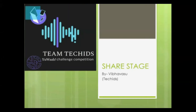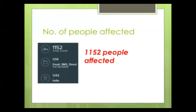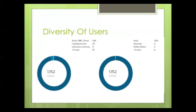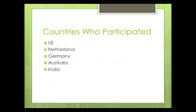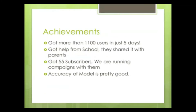Now the next page is the Share stage. The number of people affected by our project were 1,152 people — that is a huge number. There was a diversity of users: some were reaching it from direct links, email, Instagram, and other sites. Users were from India, Australia, and many more countries. The achievements we got: more than 1,100 users in just 5 days, help from our school who shared it with parents, 55 subscribers we are running campaigns with, and the accuracy of the model is really good.